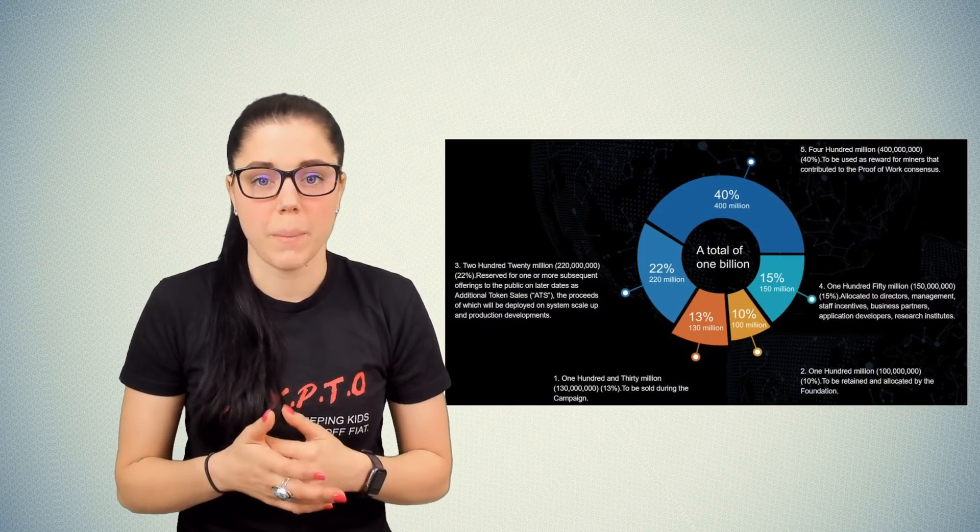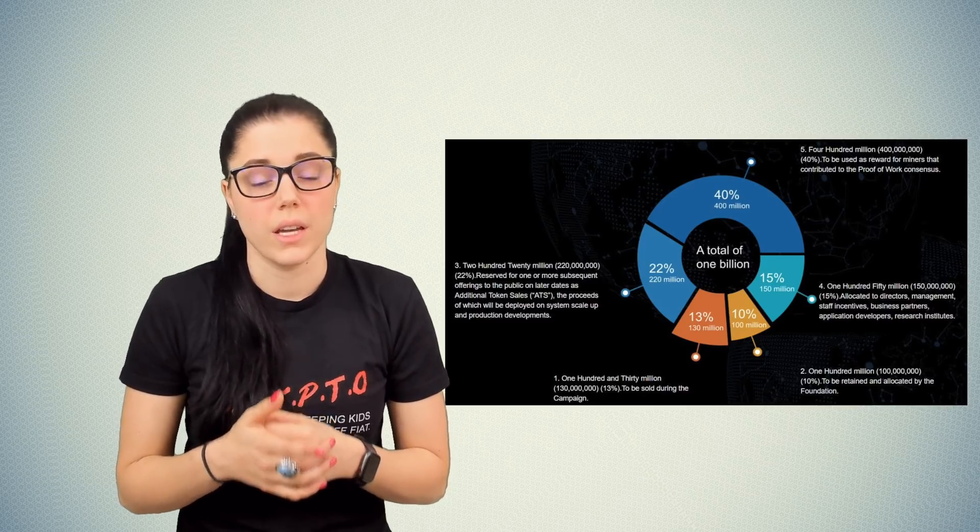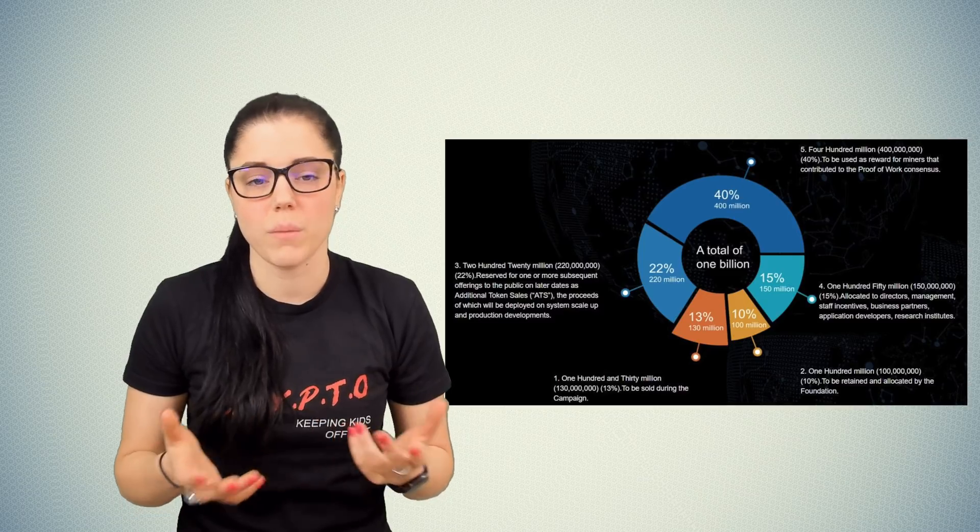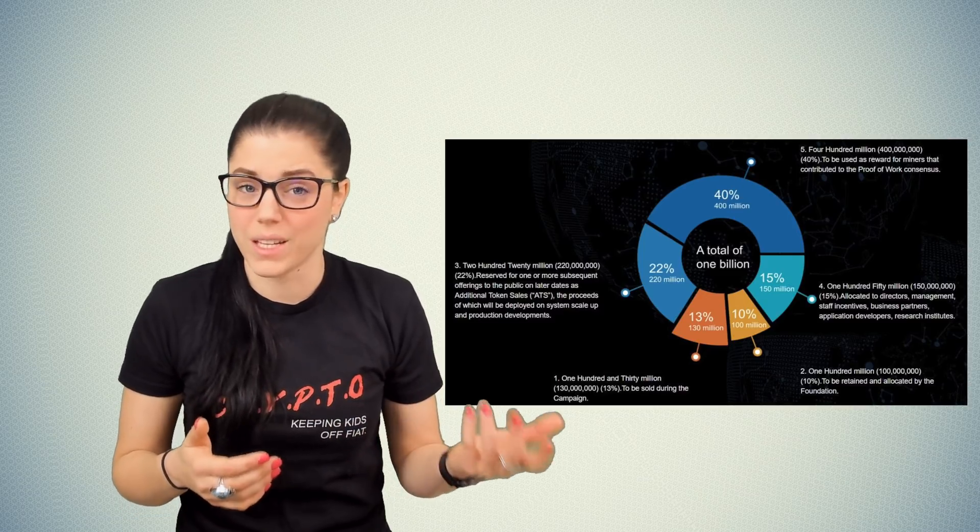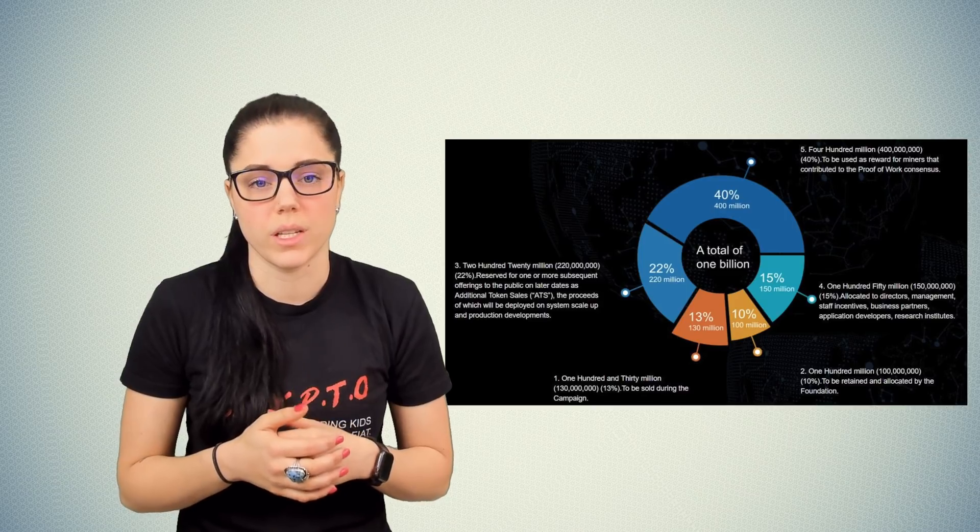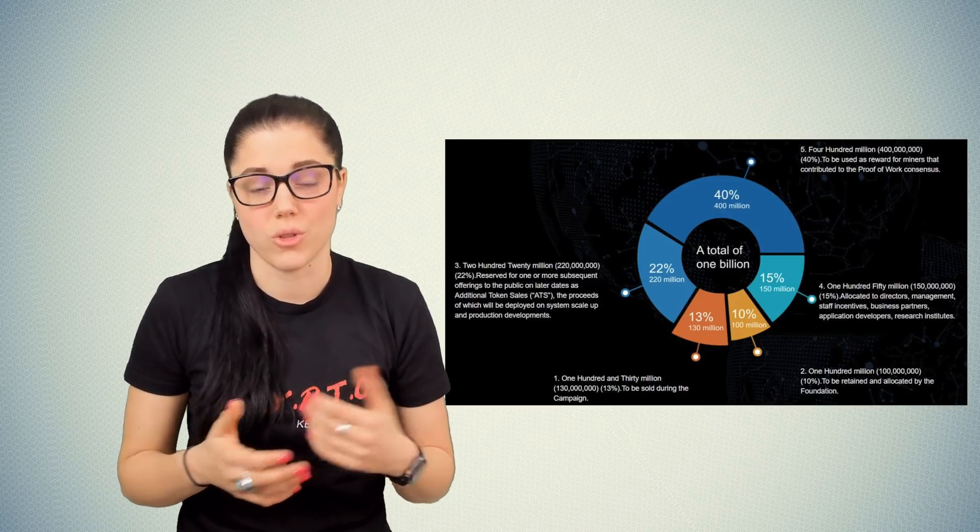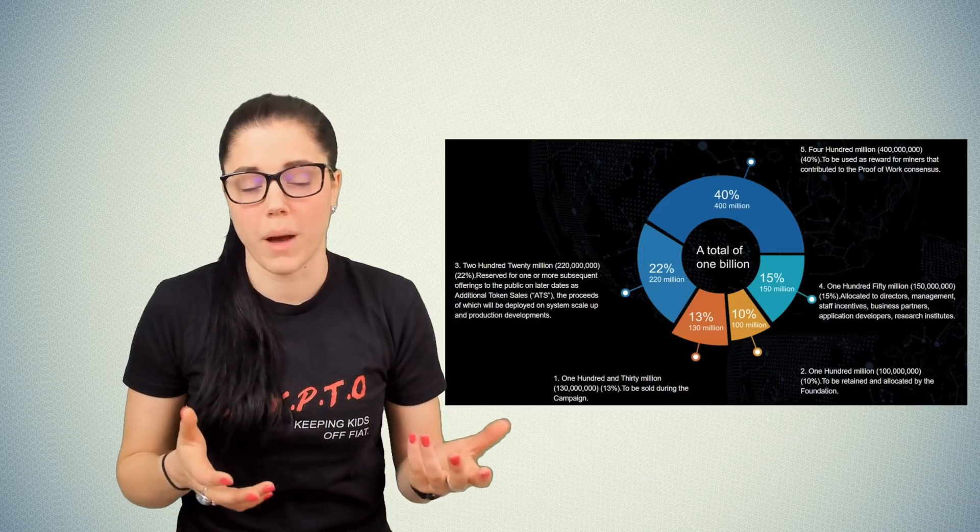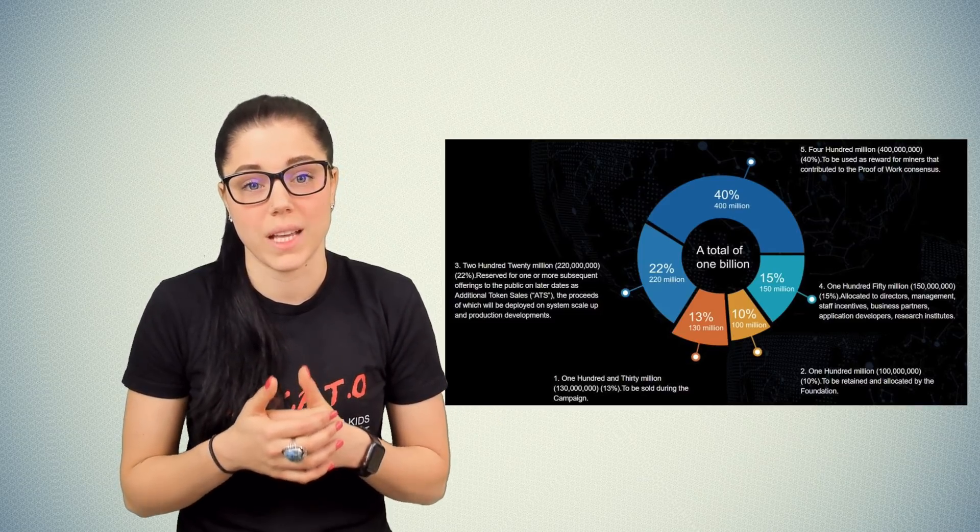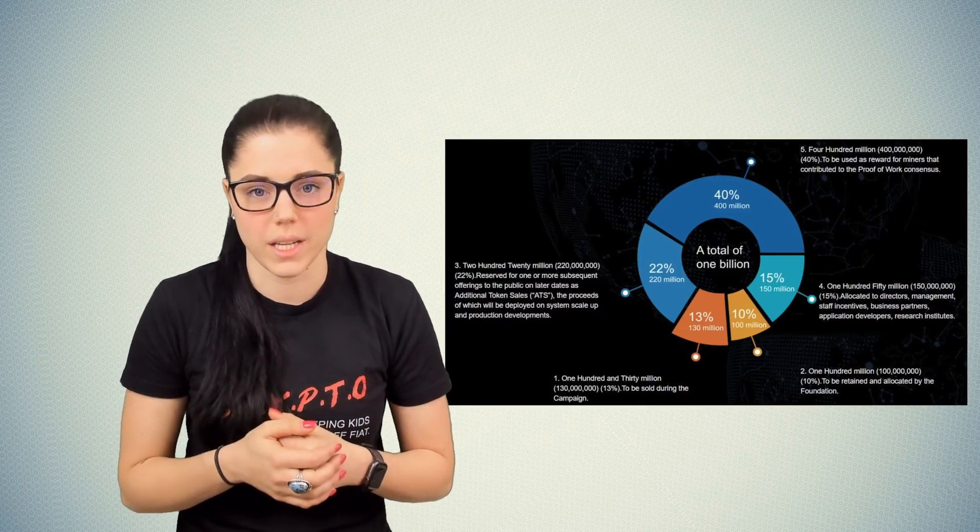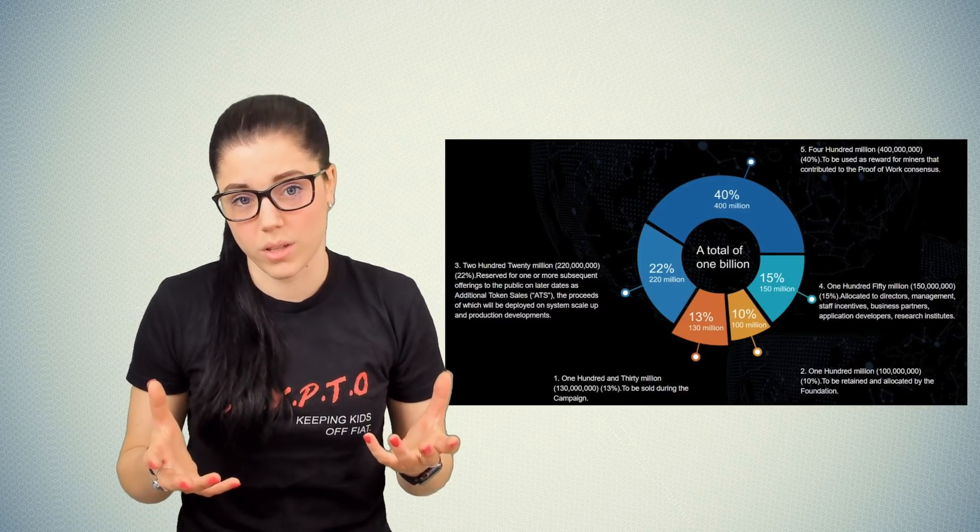Among the 1 billion MAN tokens, a total of 150 million were sold in the ICO. The remaining 850 million tokens are reserved for the following purposes: 10% retained by the foundation for the founders, directors, advisors, early backers, management, and community initiatives. After the Matrix blockchain is deployed before the end of 2018, the rest of the tokens will be distributed as follows: 22% will be issued in subsequent sales as an additional token sale, 40% is reserved for mining rewards, 15% is allocated to the foundation as management and sales incentives for grants and scholarships to support R&D.